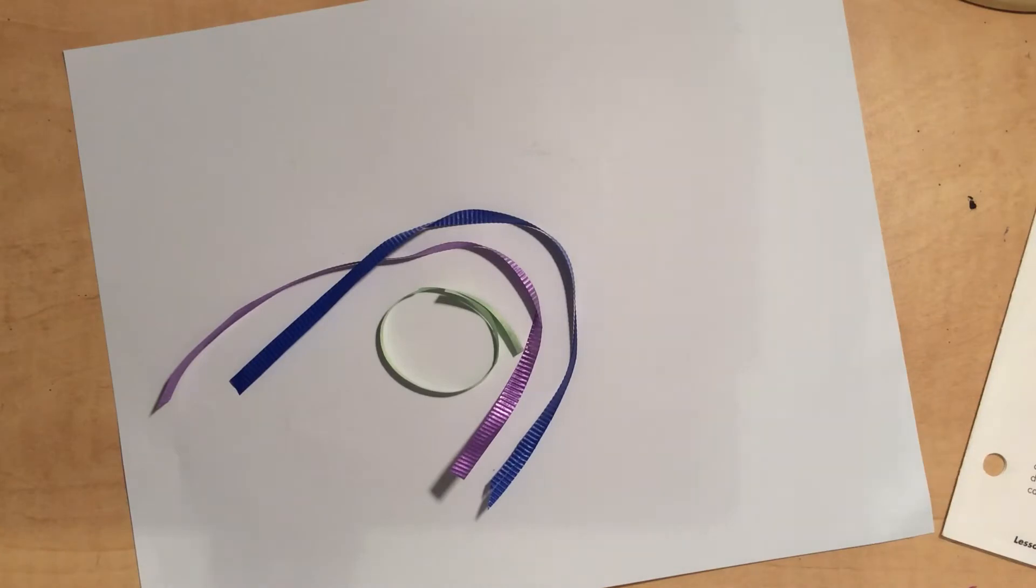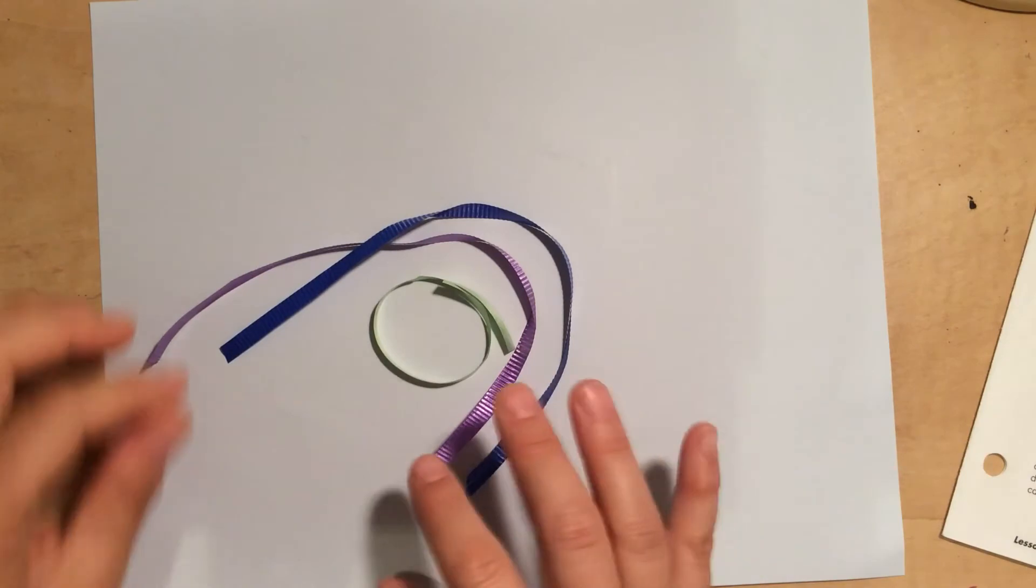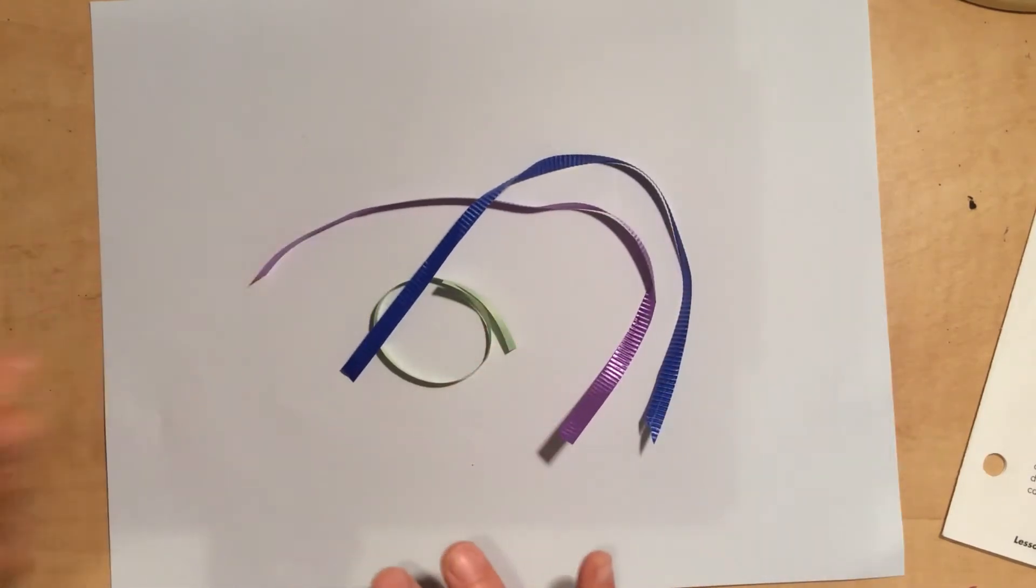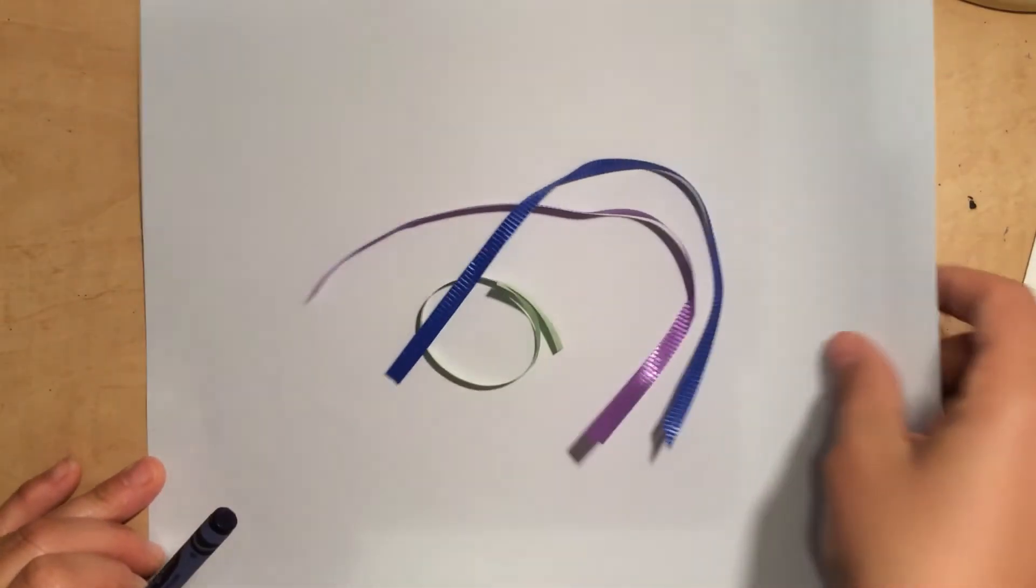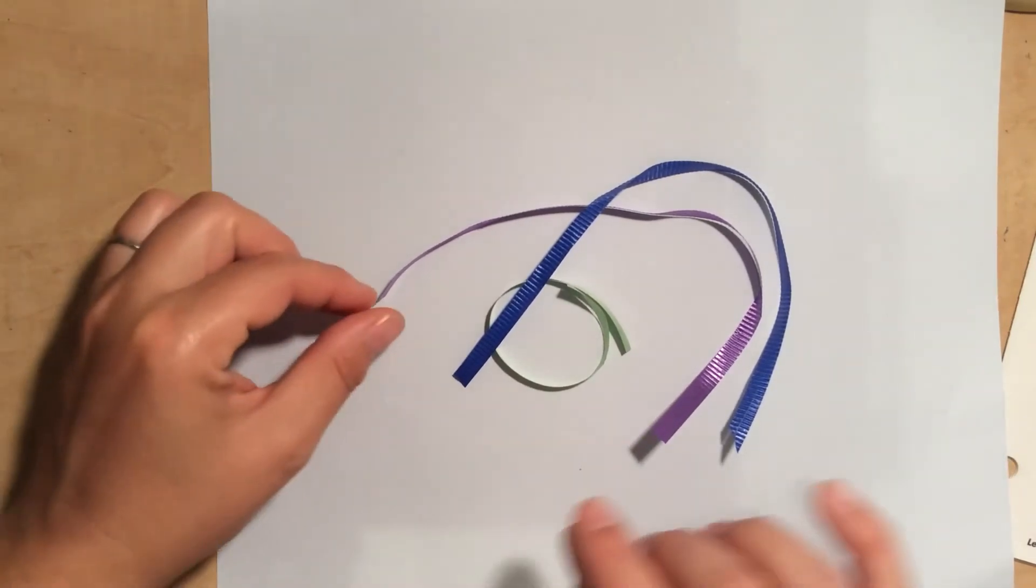All right, I need to find out how long these are, which one's shorter, which one's longer, which one's in the middle. Okay, so what I need to do is align the ends so that I can see them at a starting point. So what I'm going to do is align them with the edge of this paper right here. That's what I'm going to use as my alignment edge.